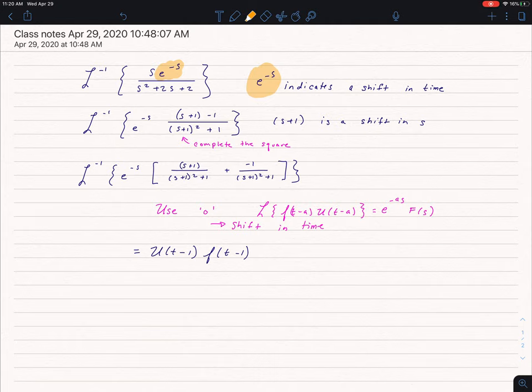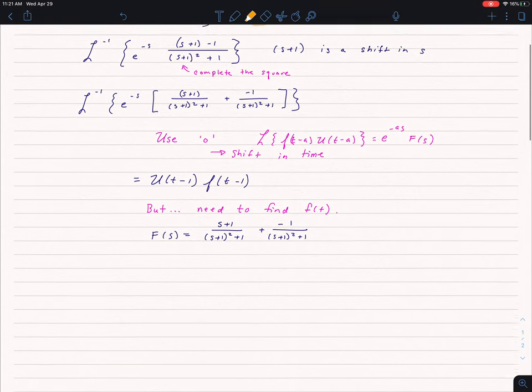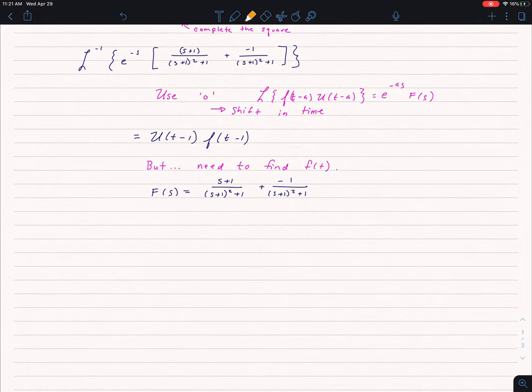So once I have that, I realize I still need to find what f of t is. So, I have f of s was equal to that bracket, that s plus 1 over s plus 1 squared plus 1, and that negative 1 over s plus 1 all squared plus 1. So I need to find the inverse Laplace transform of that.